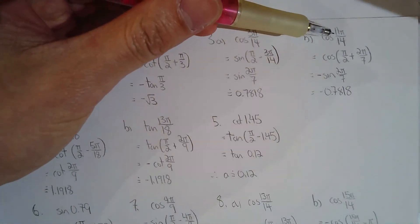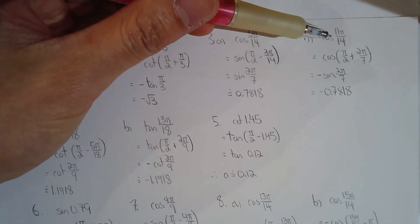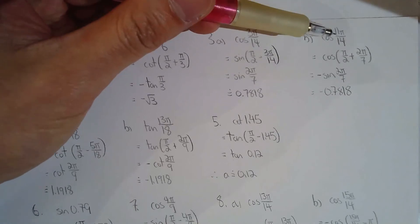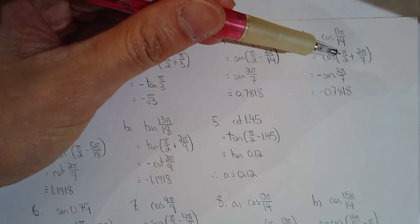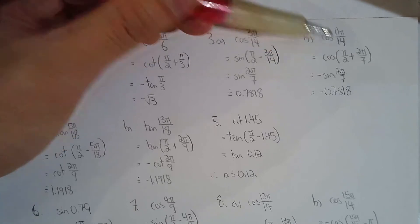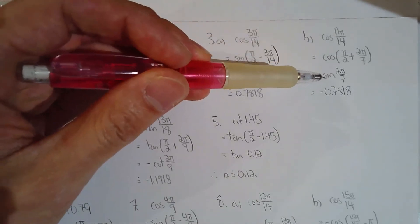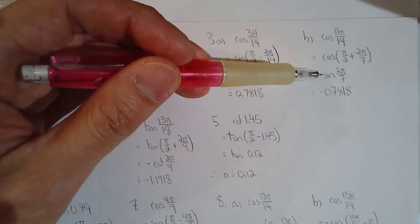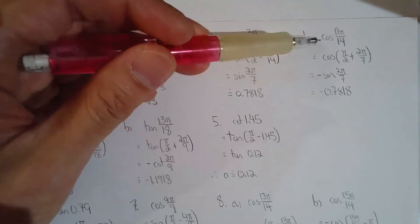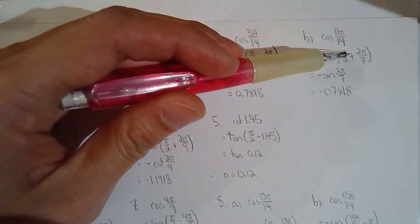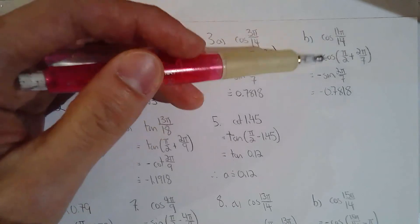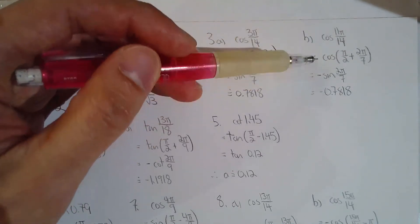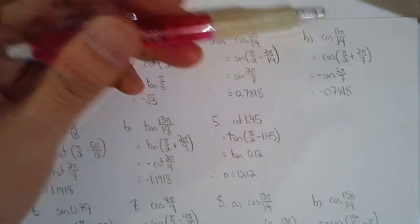For 3b, cos(11π/14) — same given information: sine(2π/7). Since 11π/14 is in the second quadrant, I find the angle between the terminal arm and the y-axis. I need to switch from cosine to sine since that's the given information. The reference angle is complementary to π/7, so I go from cosine to negative sine — negative because cosine is negative in the second quadrant. The answer is approximately 0.7818.